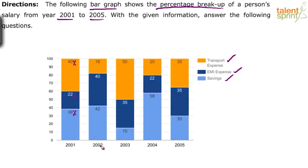If you actually observe, this should add up to 100. 38 plus 22 is 60%, and 60% plus 40% is 100%. Every bar from 2001 to 2005 is maximum up to 100%. So out of the 100% salary, the breakup between transport expense, EMI expense, and savings is given to us. Interestingly, this person does not have any food or other expenses, but neglecting that, we got to answer the questions.